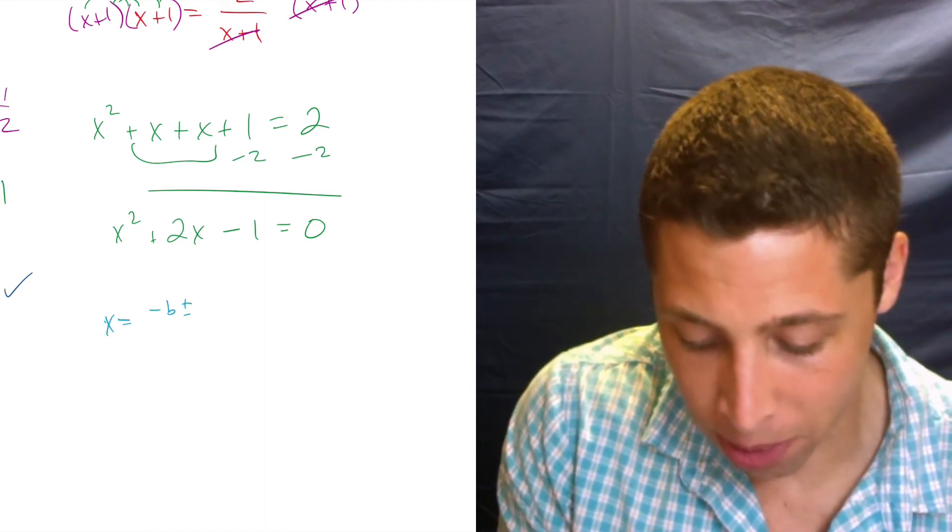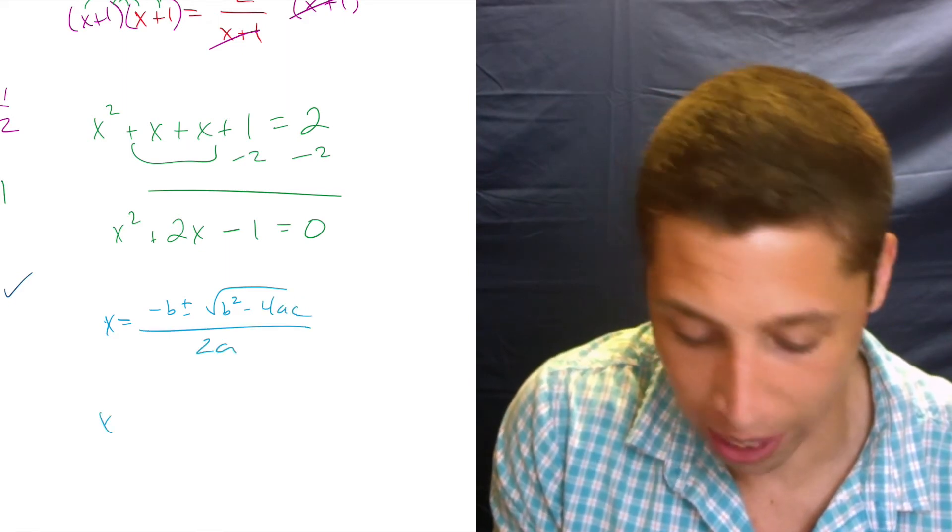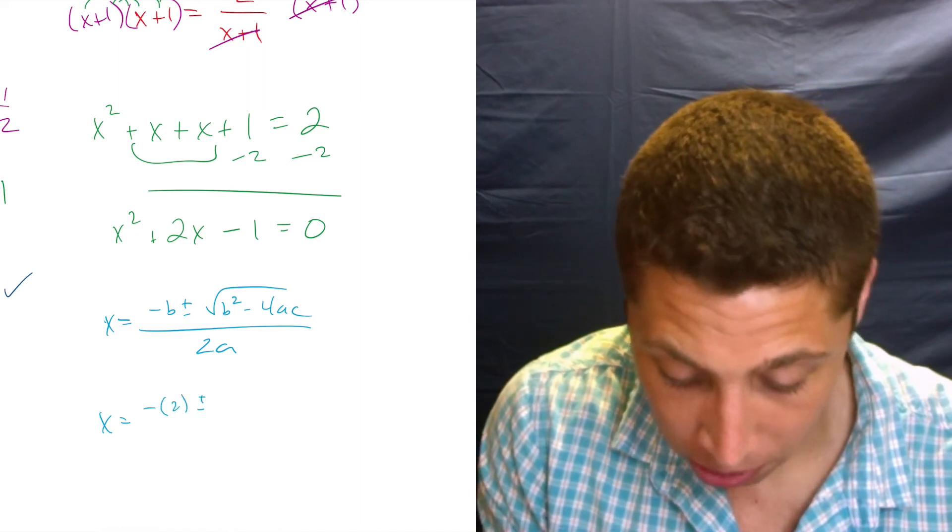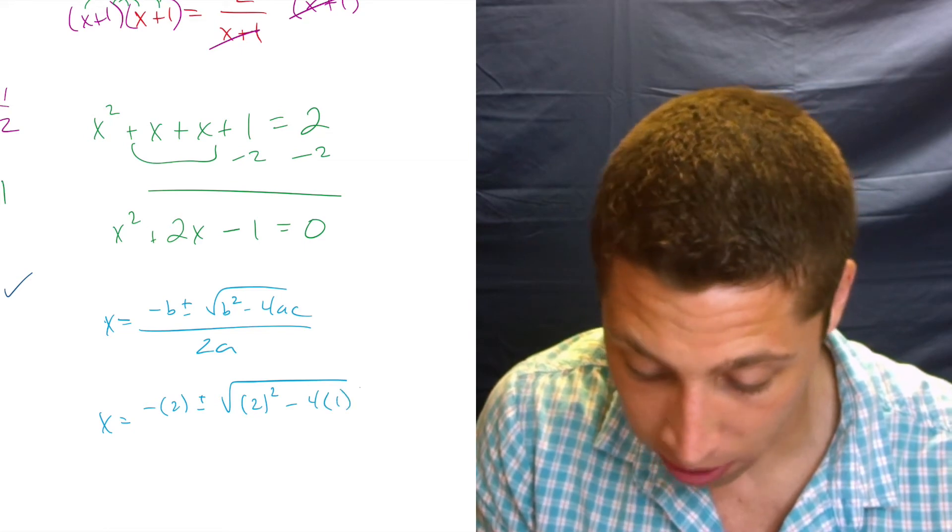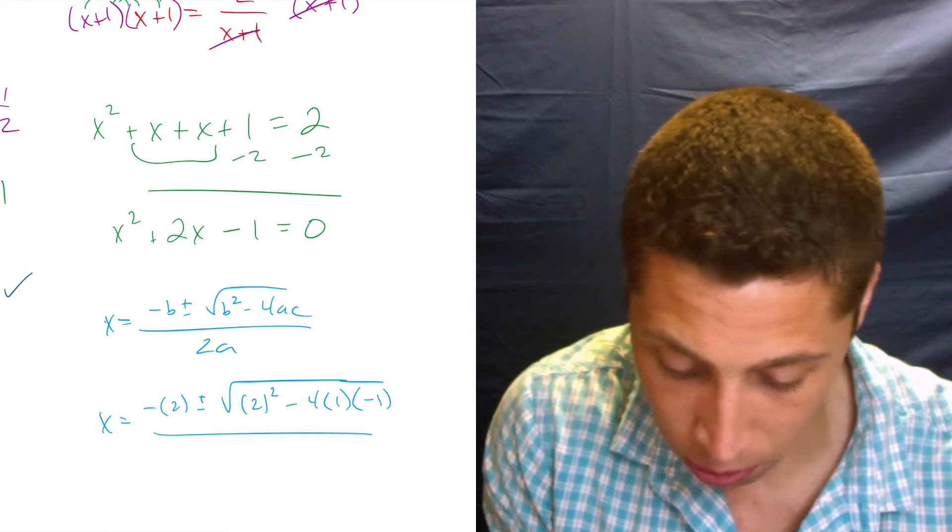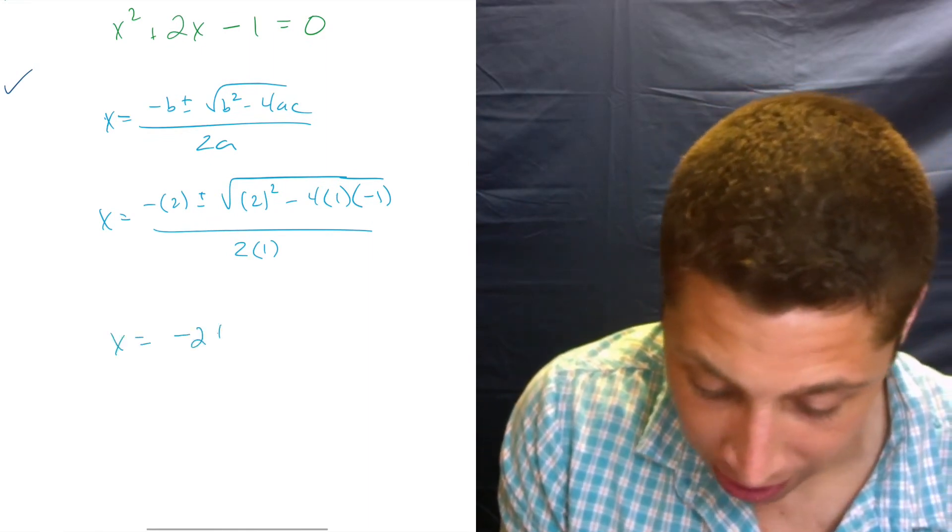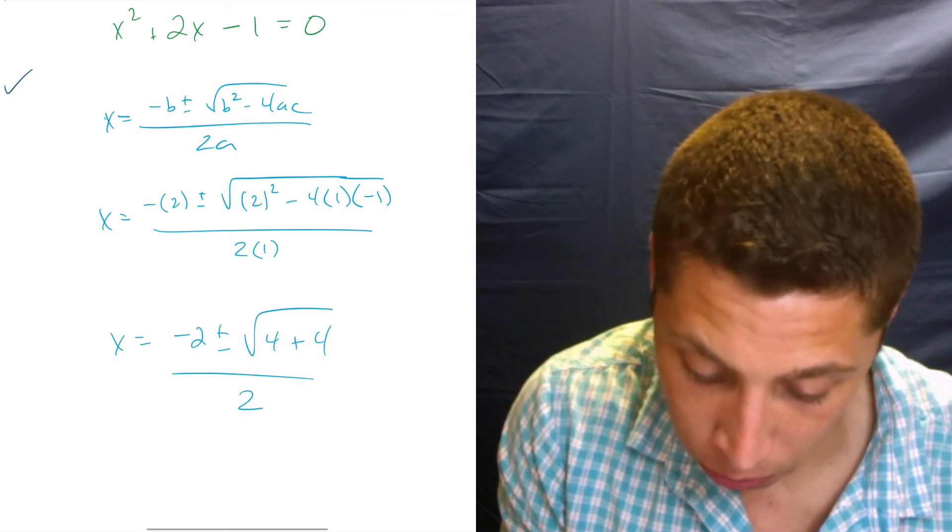X is equal to negative b plus or minus the square root of b squared minus 4ac all over 2a. X is equal to negative b. So that's negative 2 plus or minus the square root of 2 squared minus 4 times 1 times negative 1 all over 2 times 1.